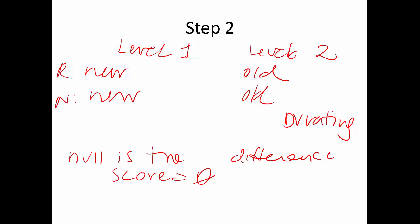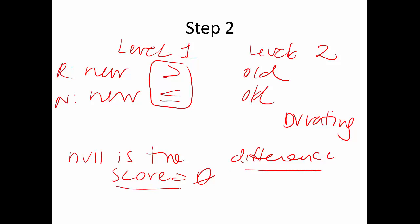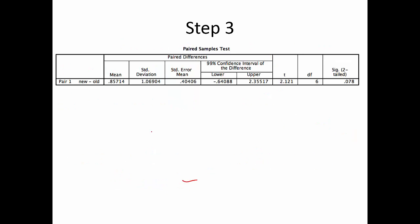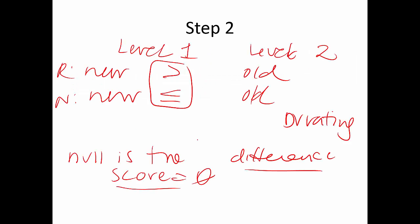The easiest way to think about it conceptually is that I want new to be greater than old, and the null hypothesis is that new is less than or equal to old. The math is testing the difference scores. I put new first because the greater-than test is easier to follow. Whatever order you pick in step two, make sure you enter them in the same order — or you'll get reversed numbers. For a non-directional test, order doesn't matter; for a directional test (greater than or less than), it does matter.